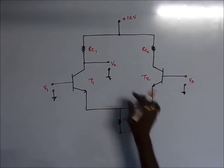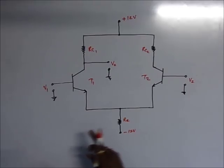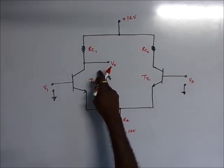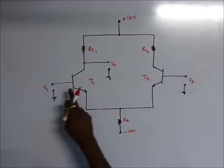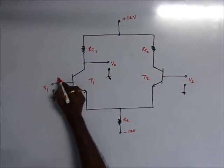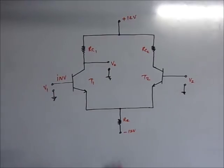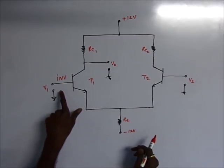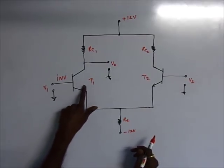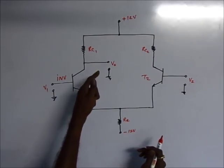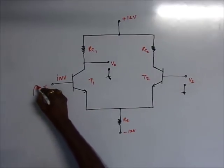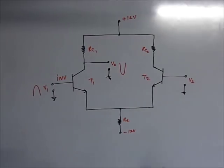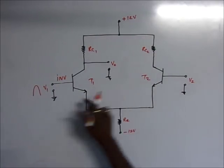We need to identify which terminal is the inverting input terminal and which is the non-inverting input terminal. The output is taken from the collector of transistor T1, so the base of T1 is considered the inverting input terminal. This is because of the inverted characteristics of common emitter configuration — when we apply a positive-going input at the base of T1, its output will be negative-going. So this input terminal is known as the inverting input terminal.